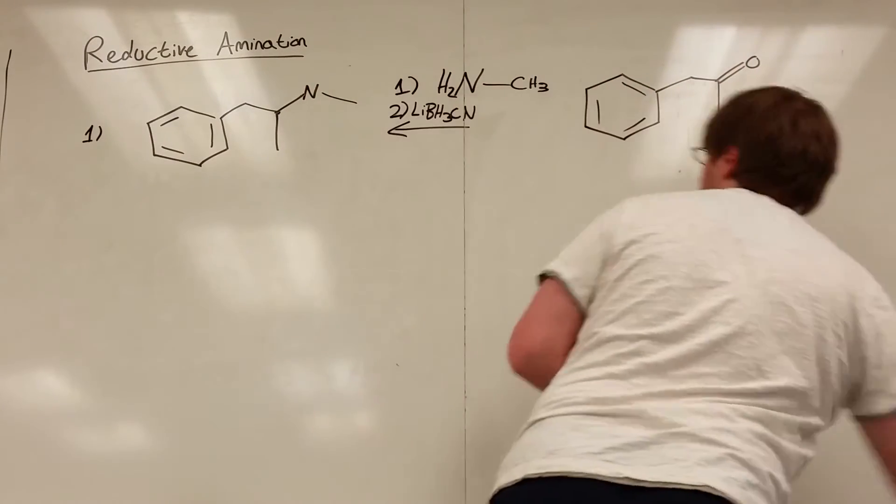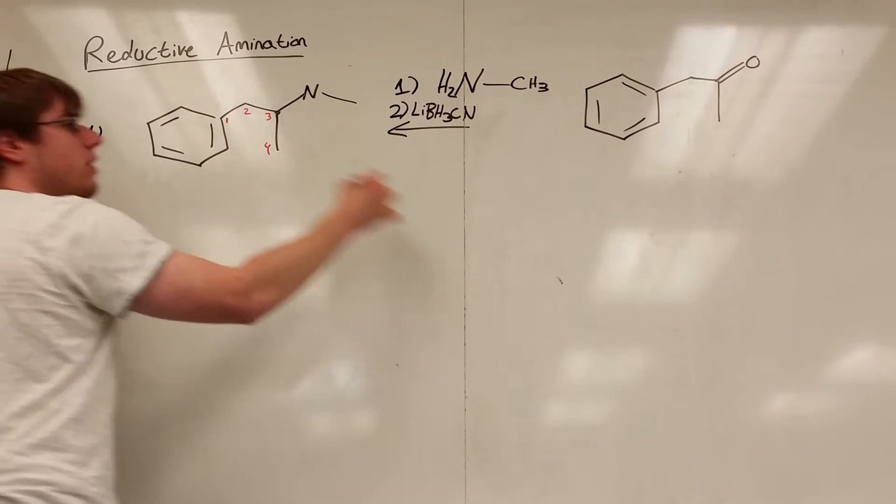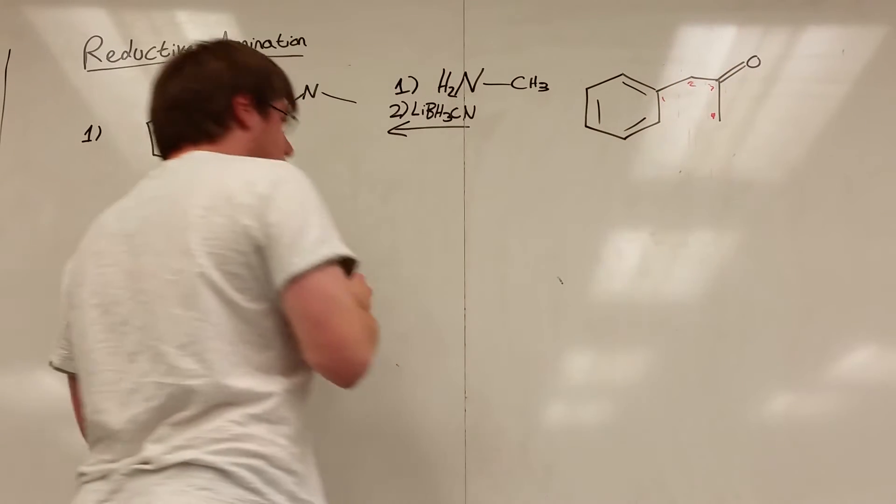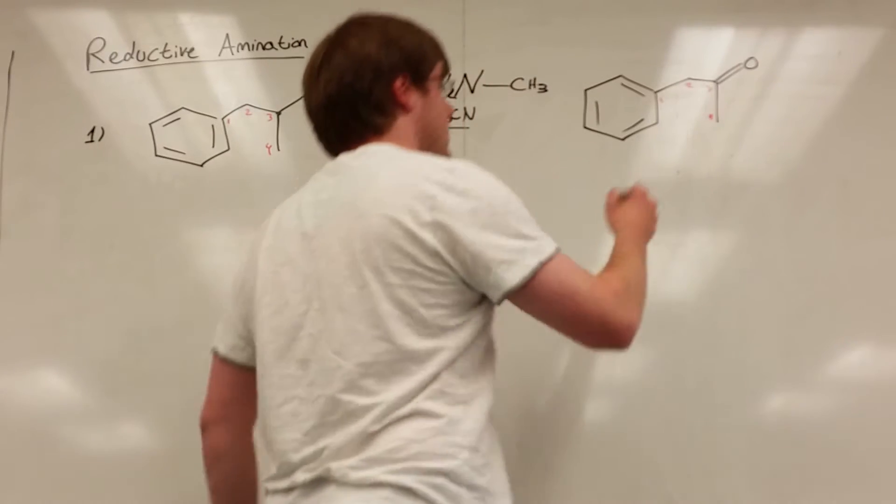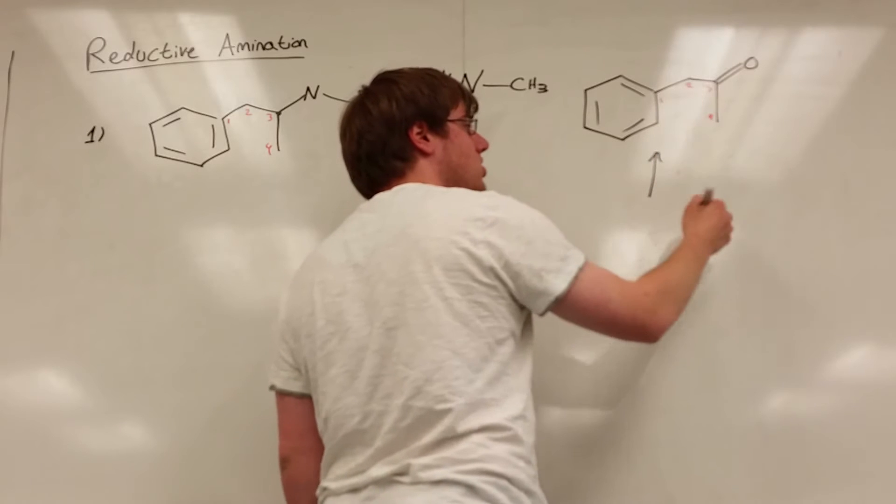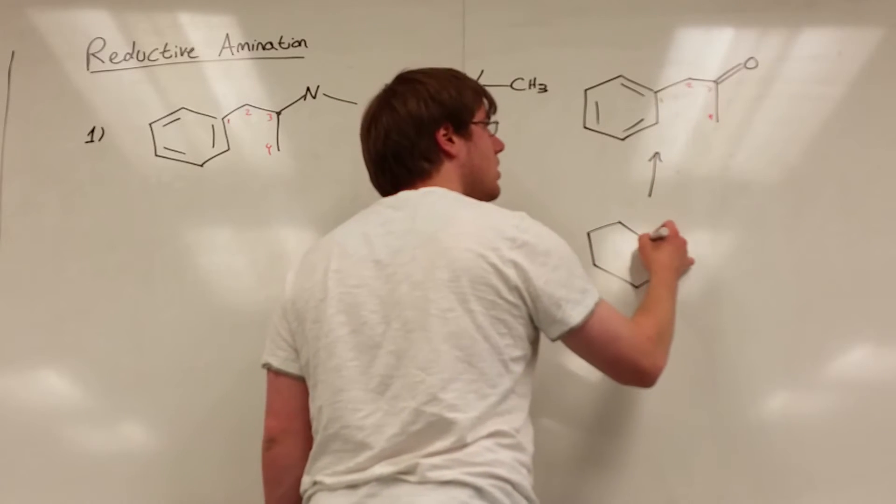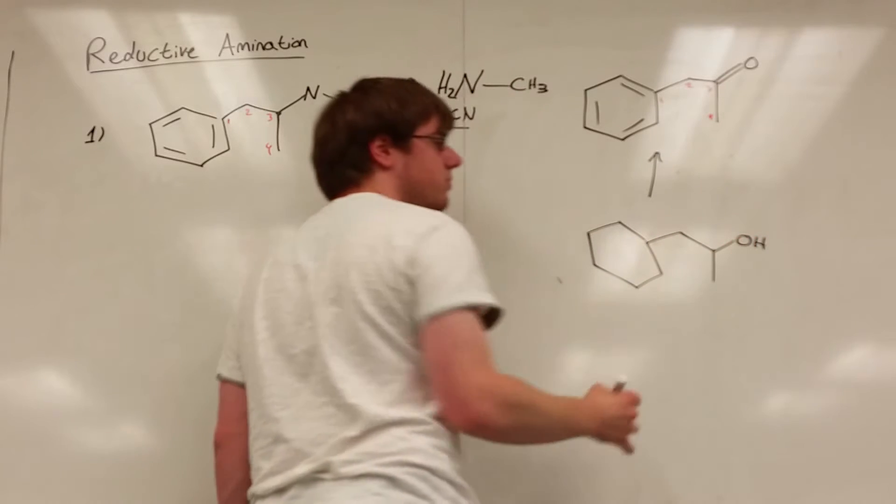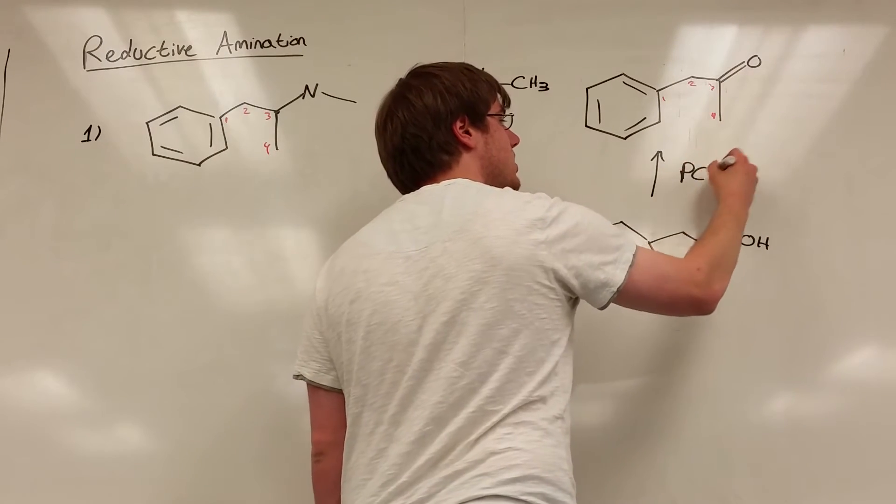So let's just number our carbons so we can keep track. So we'll say this carbon on the benzene is one, two, three, four. And here we have one, two, three, and four. So we know that we can't cut when we have a double bond O if the arrow is pointing at the double bond O. So we have to turn this double bond O back into an OH. So we need to have this. Now I can turn an OH into a C double bond O by using PCC.